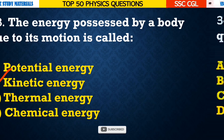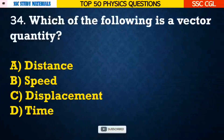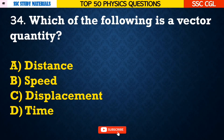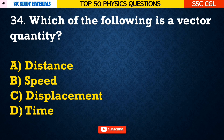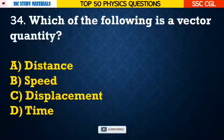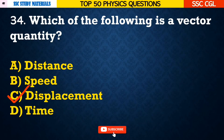Question number 34: Which of the following is a vector quantity? — Answer C. Displacement.